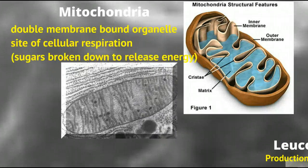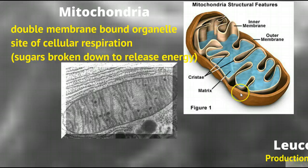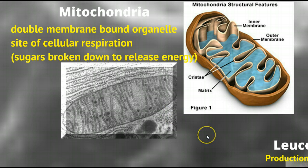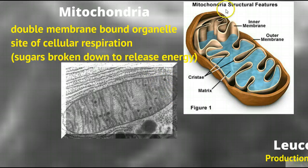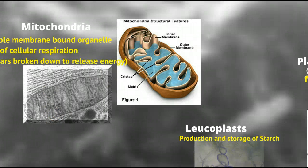Now we'll move on to the mitochondria. The mitochondria is a very large organelle with a double membrane, and the origin of this double membrane is discussed in the video on the origin of eukaryotic cells and the endosymbiosis hypothesis. This is the site of cellular respiration, where we break down sugars to release energy. In our analogy of the cell being a factory, this is our power plant, where we burn fuel, creating energy to run the cellular activities.